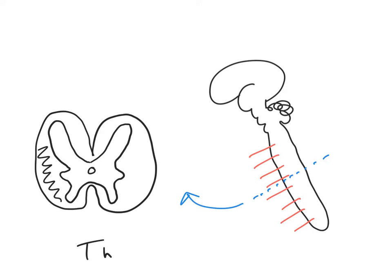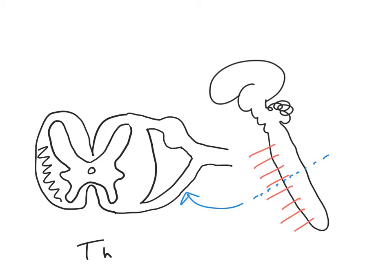If we're going to show how the spinal nerves are made, we need to add an additional two components to this diagram - those being the dorsal and ventral roots. So here is the dorsal root which I'm drawing on at the moment. And here is the ventral root which I'm drawing on right now.